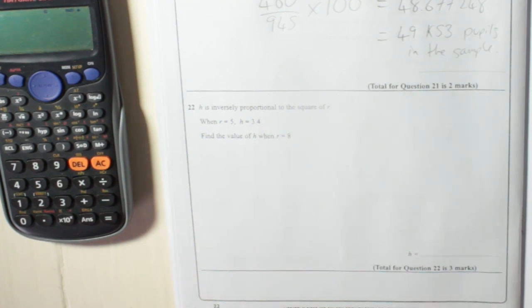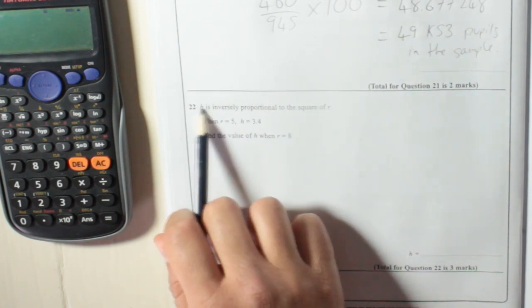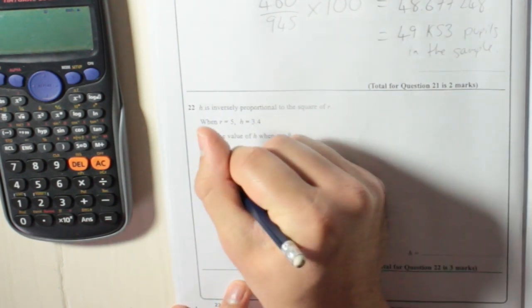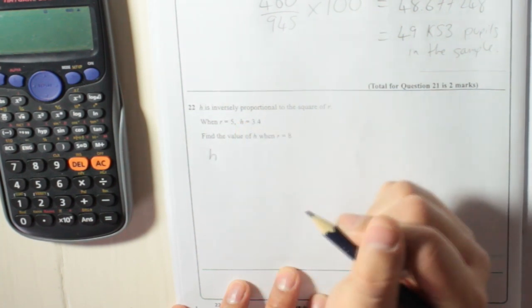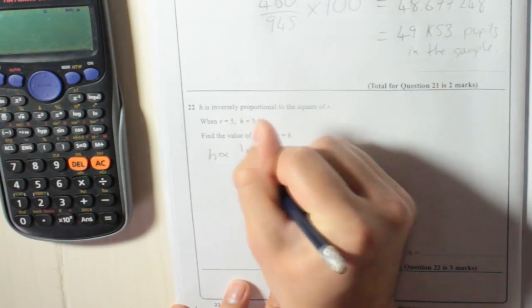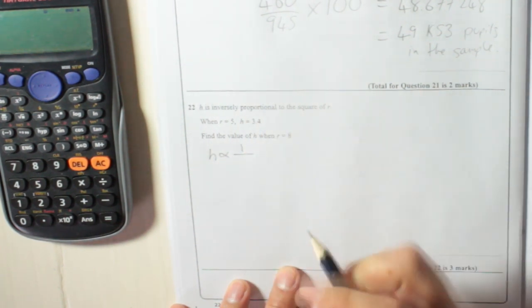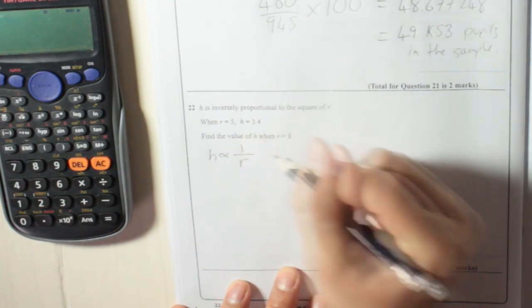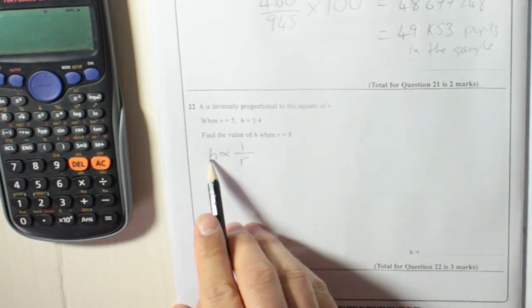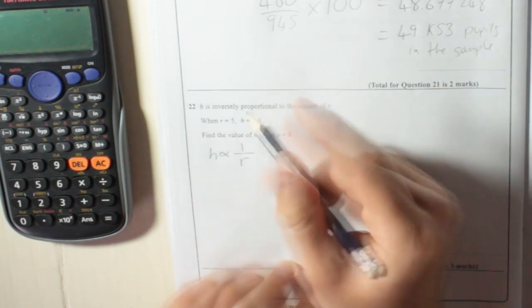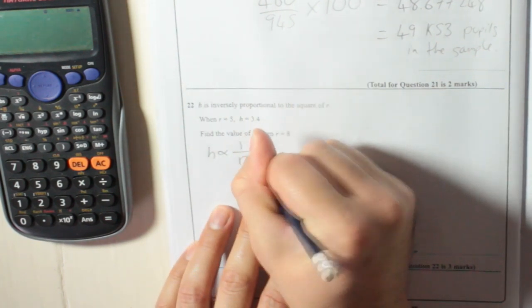So first thing, we should write down what this is. It's saying that h is inversely proportional to the square of r. That means that h is proportional to 1 over, that gives us our inverse r. Now at the moment, that says h is inversely proportional to r. But it's the square of r, so we need to square it.